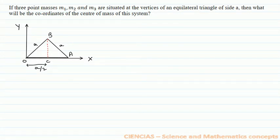Hello students, here we are solving a question based on the topic of rotational motion. The question is: if three point masses m1, m2, and m3 are situated at the vertices of an equilateral triangle of side a, then what will be the coordinates of the center of mass of this system?